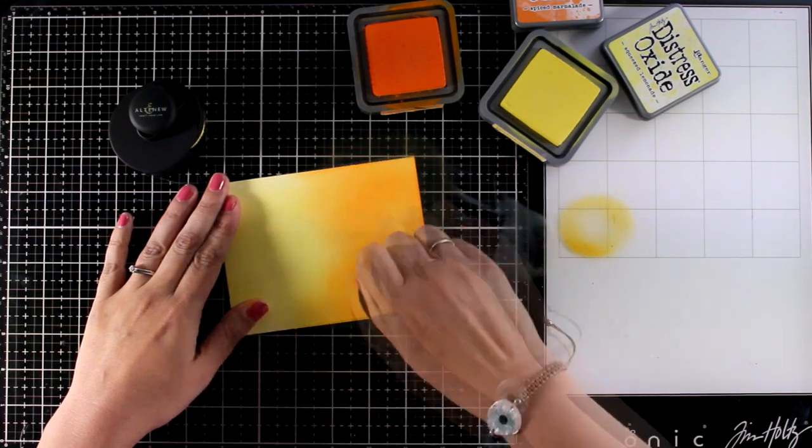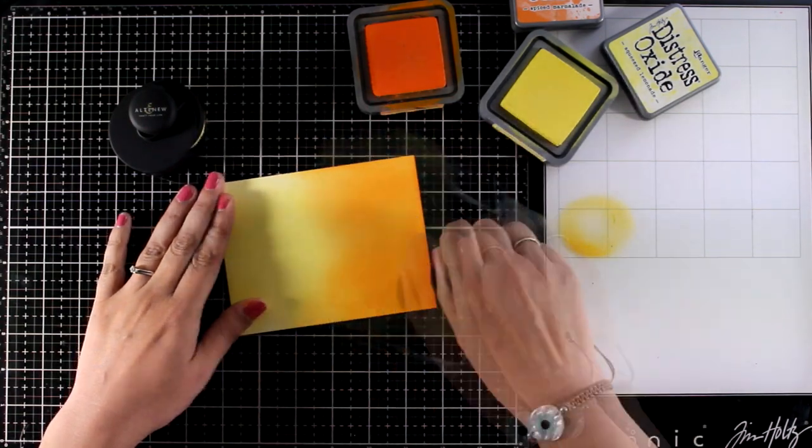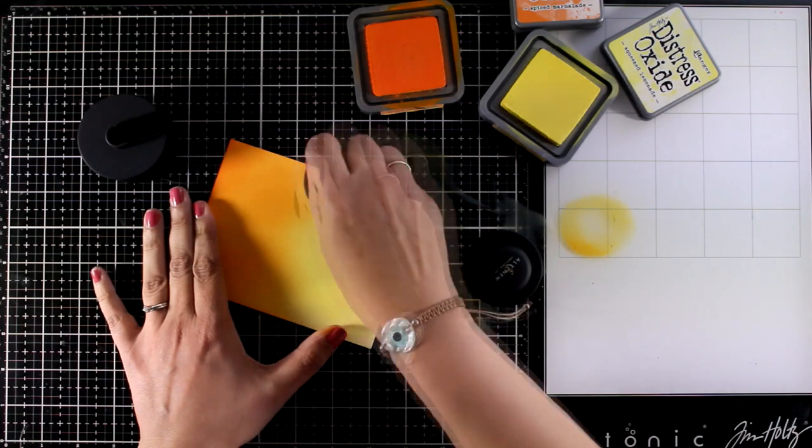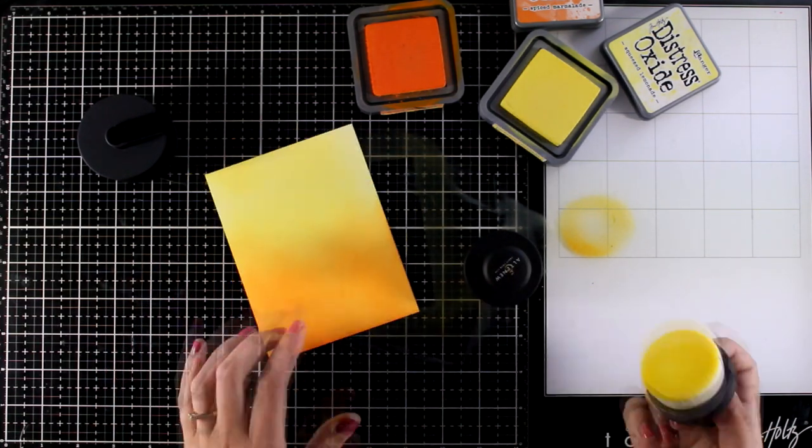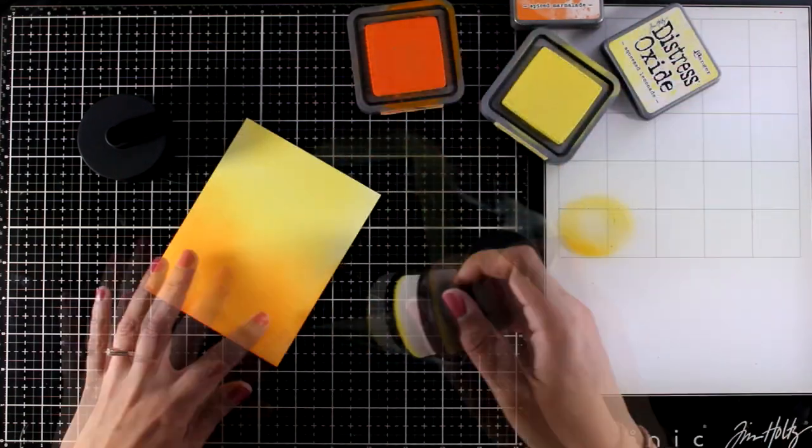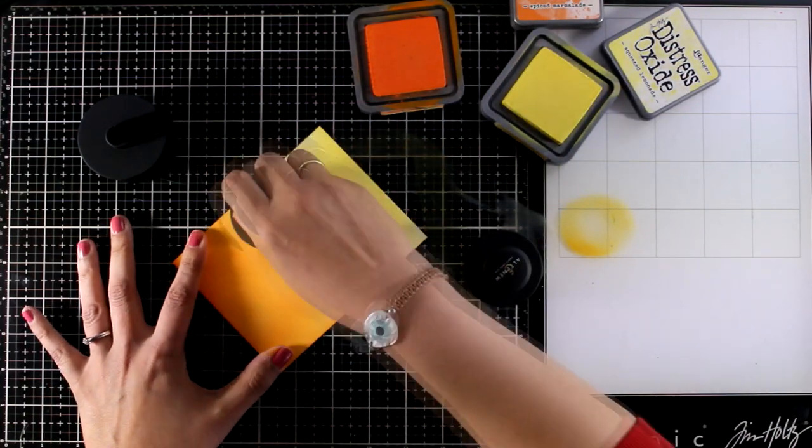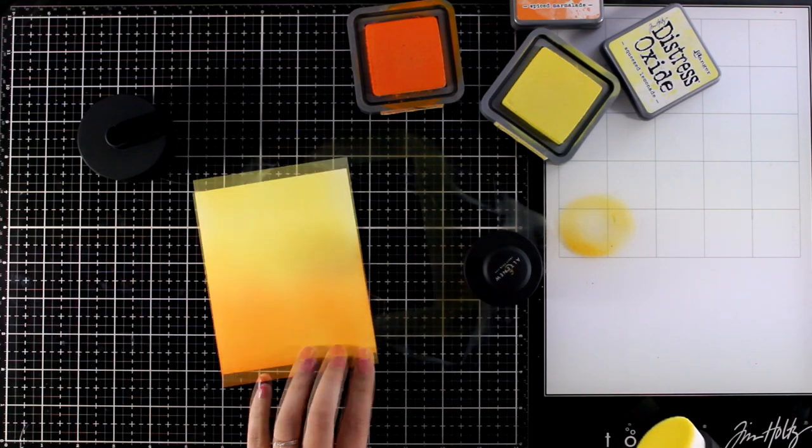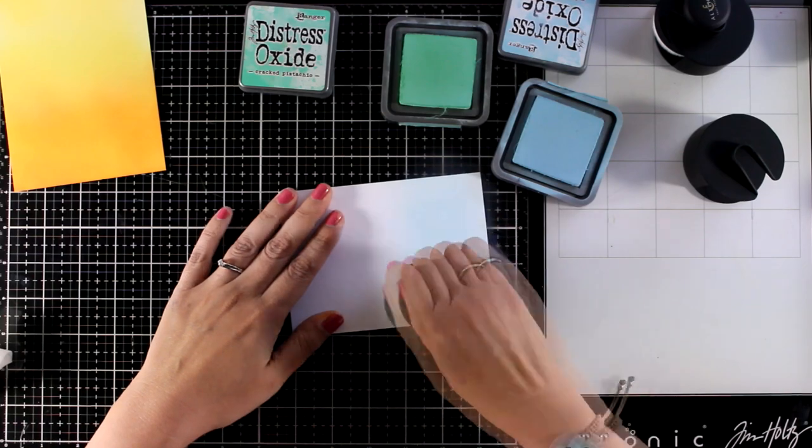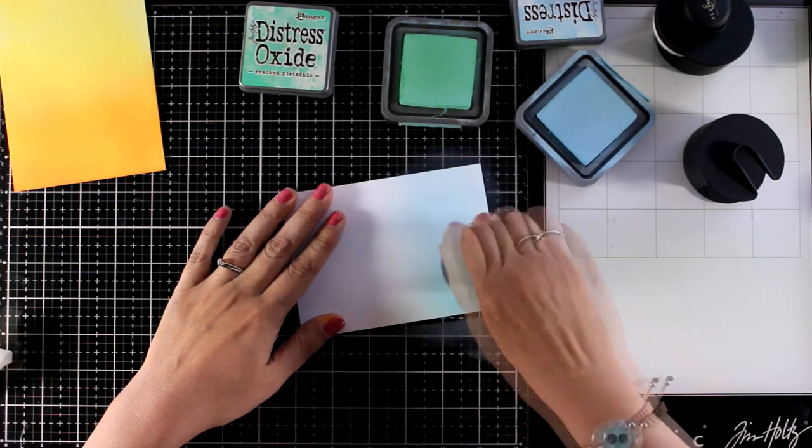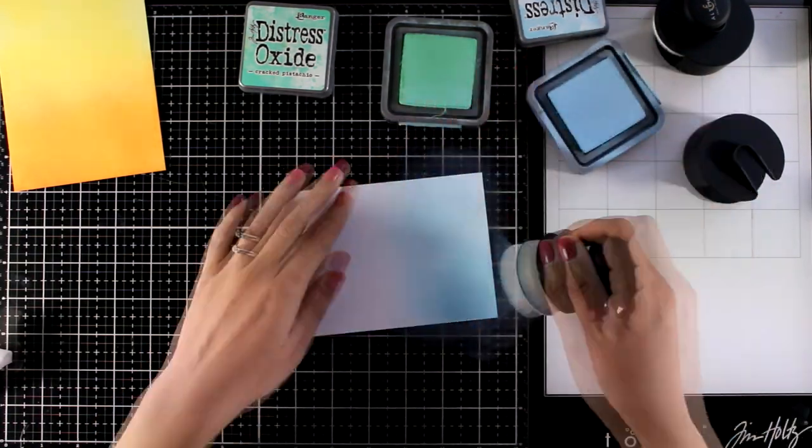But the paper that I'm working on is Neenah Solar White. So you can see I end up having a lovely blended look. Of course I'm using these Distress Oxide inks which are a dream to blend. And now I'm going to switch to a different color combo. I will put this aside for another card and let's make a background which I'm actually going to use later on for my card today.